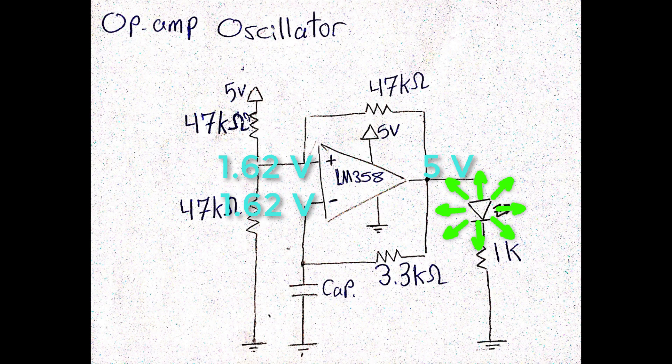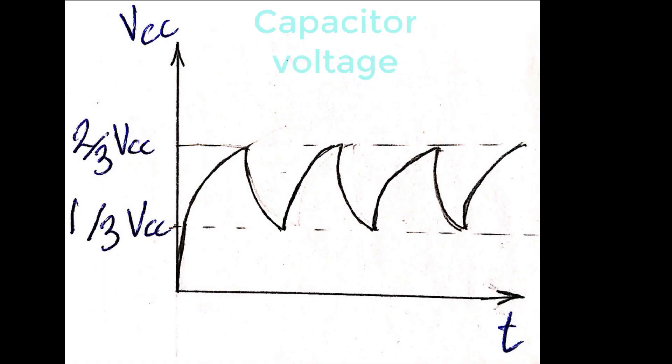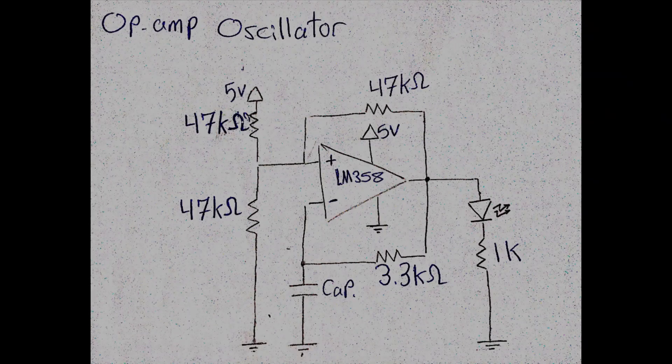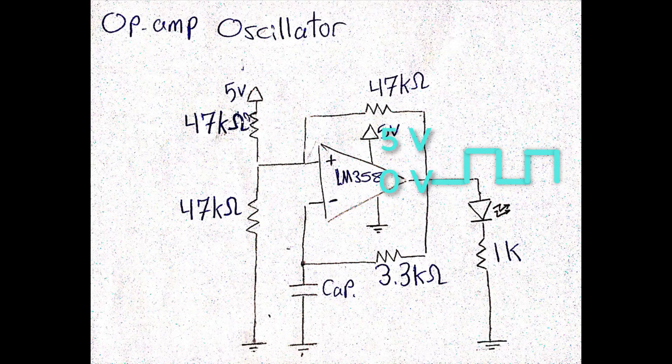This will change the voltage divider circuit, and the non-inverting input voltage will return to 3.3V. In this way, while the capacitor voltage is oscillating between 1.6V and 3.3V, the oscillator output is oscillating between 0V and 5V.